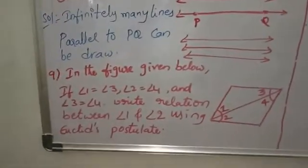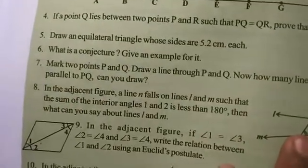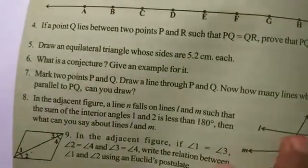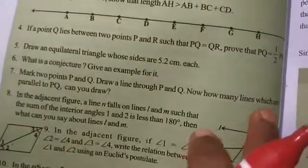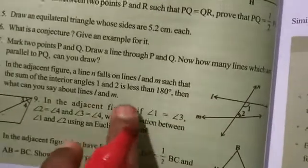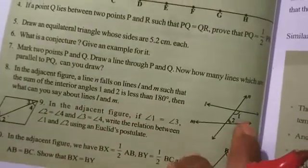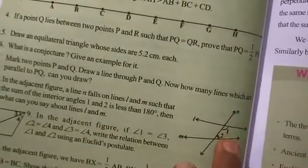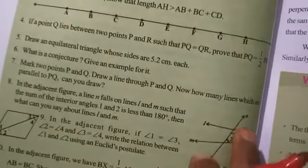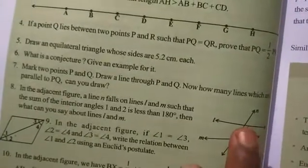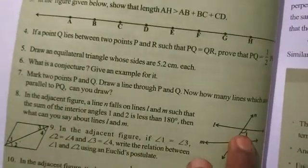Eighth question is also homework for you. From the diagram, L and M are two lines and N is the transversal line. The angles are such that the sum of interior angles is less than 180 degrees. Go search the previous course or the textbook to get that answer.